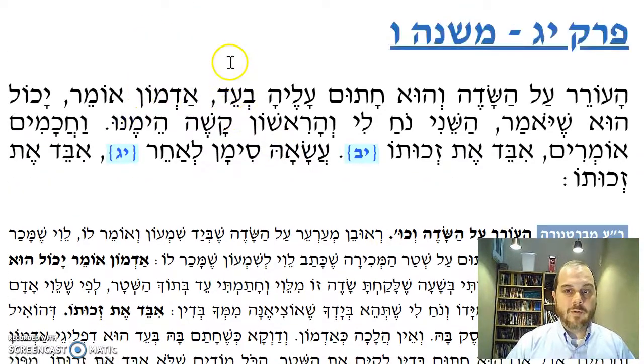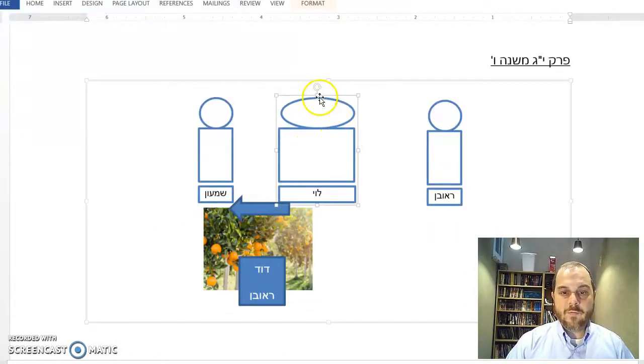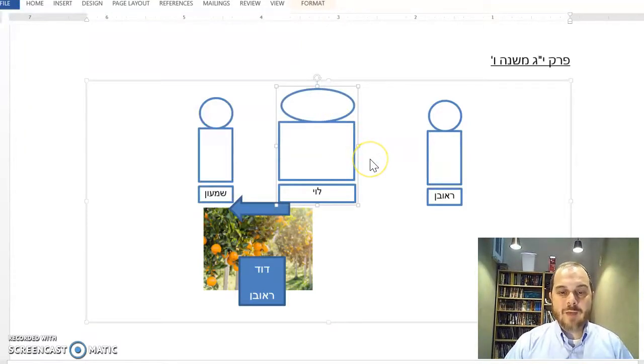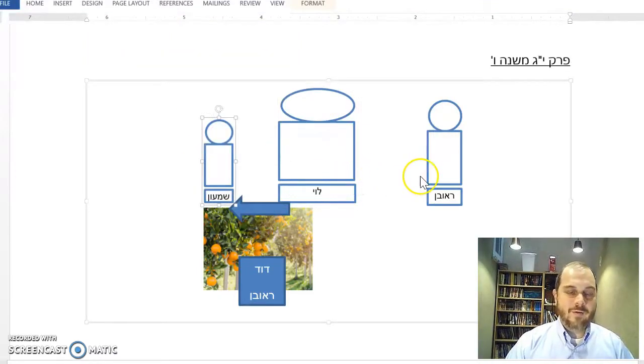According to the Mishnah, Admon omer - he can say, Reuven can say: Ha'sheni noach li, v'harishon kashah himenu. I'll tell you why I signed. Levi is a ruffian, a tough guy. I knew I'd never have a chance to get the field out of Levi. Shimon, you're not such a big guy. I'm not so worried about you.